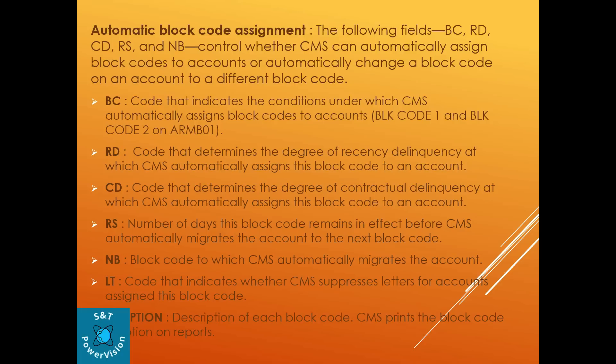Apart from this, there are some automatic block code assignments. The following fields — BC, RD, CD, RS, and NB — control whether CMS can automatically assign a block code to an account or automatically change a block code to a different one. BC indicates the condition under which CMS automatically assigns block code 1 or block code 2 on ARMB. RD determines the degree of recency delinquency at which CMS automatically assigns this block code. CD indicates the degree of contractual delinquency at which CMS automatically assigns this block code. The meaning of RD and CD delinquency is explained in detail in a separate delinquency video.